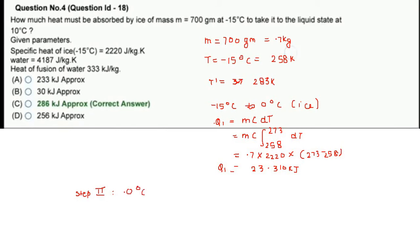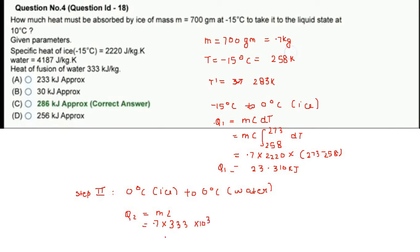Step 2: Ice at 0°C to water at 0°C। Phase transition हो रहा है, इसलिए latent heat use करेंगे। Q2 = M·L = 0.7 × 333 kJ/kg = 233.1 kJ।